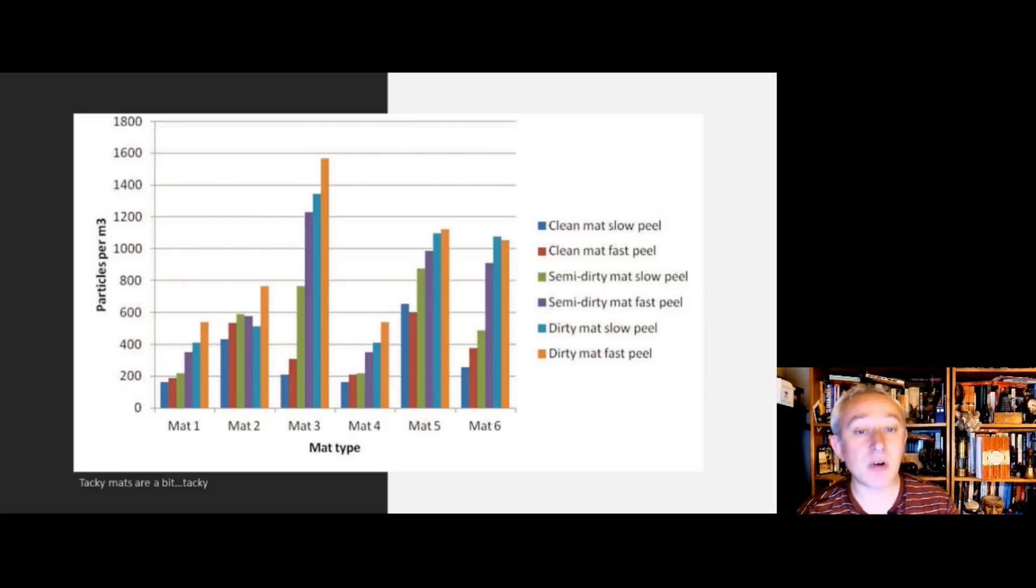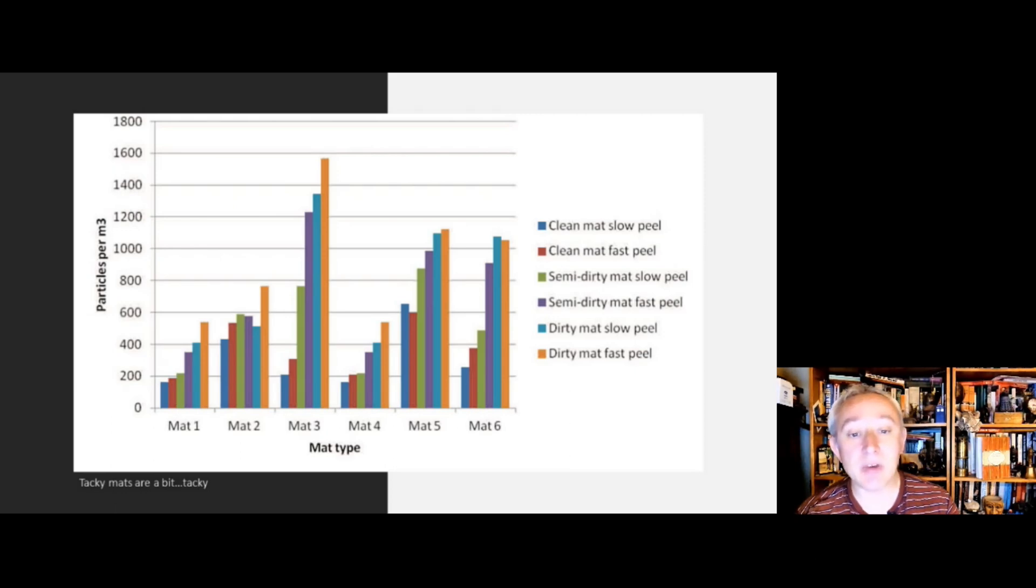Now we've got a graph showing the relative risk of tacky mats, which is why it's preferable to use Dyson polymeric flooring. When you peel away the top layer to replace it with another layer, this tends to generate high levels of airborne particles. The data on the screen is data that I've actually compiled from a study where I've done particle counting and looked at the dispersion of particles in the air. You can see the relative risks there.